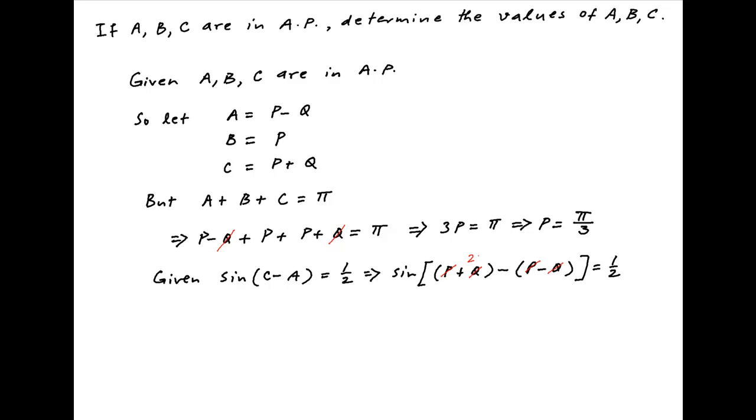P cancels in the brackets on the left-hand side and we are left with sin of 2Q is equal to half. Now half is equal to sin of π upon 6.